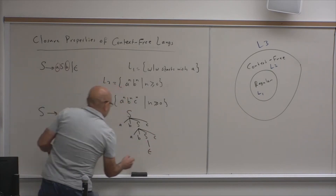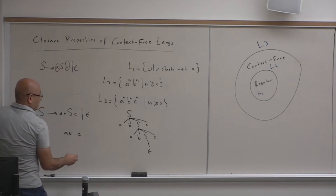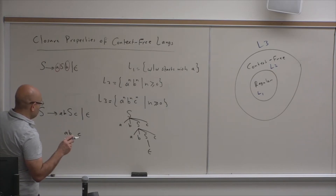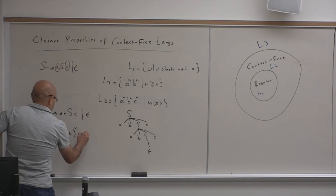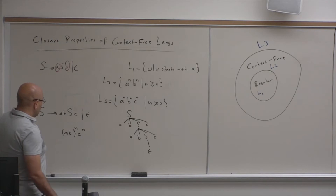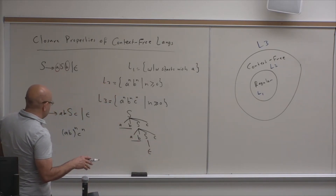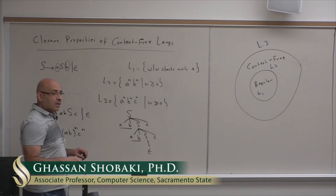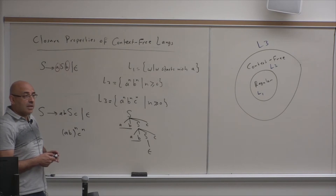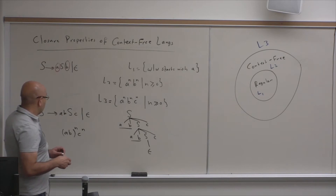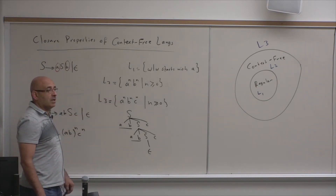The grammar S → A B S C | ε generates strings like A B A B C C — you can repeat A B as many times as you want, but with every A B you get one C. So you are still counting two things, not three independent things. This language is not L3. So this grammar does not generate L3 — there is no context-free grammar for this language, and this is not a context-free language.